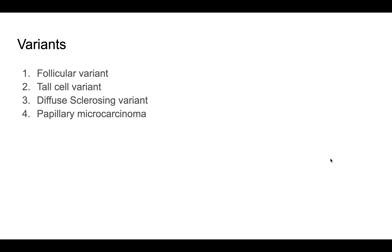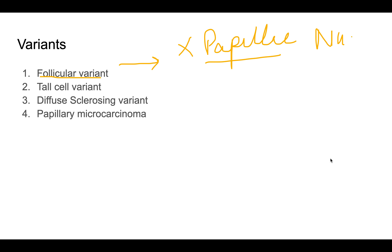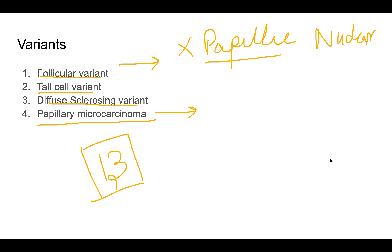Regarding variants — there are around 13 variants. The follicular variant has follicles but no papillae, while nuclear features are always present. The tall cell variant has taller cells. The diffuse sclerosing variant and papillary microcarcinoma — where the tumor focus is very small — are other notable variants.